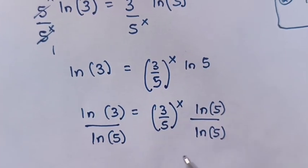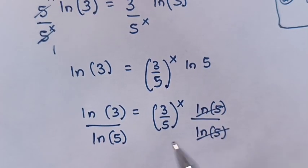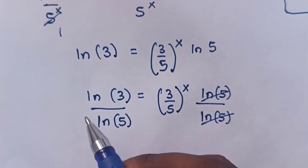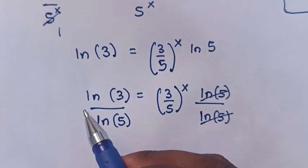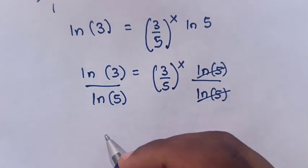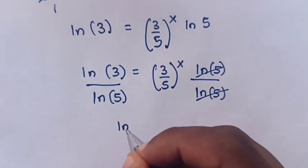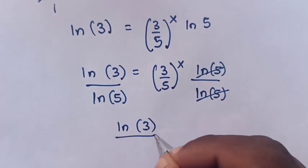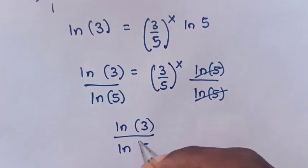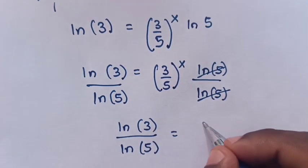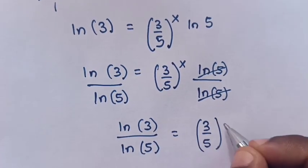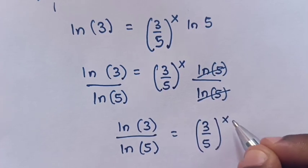So log(5) will cancel, and our equation will be log(3) / log(5) is equal to (3/5)^x.